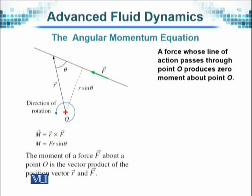A force whose line of action passes through point O produces zero moment about point O. The direction of rotation, M = R cross F.